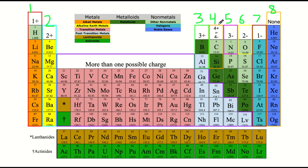The fourth column has 4, so carbon and silicon here could either lose 4 electrons and take on a 4+ charge, or they could gain 4 electrons, going to the electron configuration of the next noble gas, and take on a 4- charge. Nitrogen could gain 3 electrons — you can just count 1, 2, 3 — and take on the electron configuration of neon, therefore having a 3- charge.